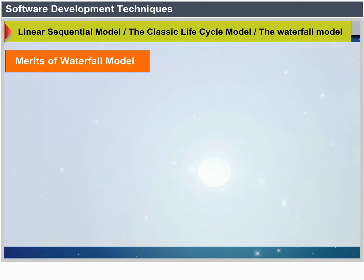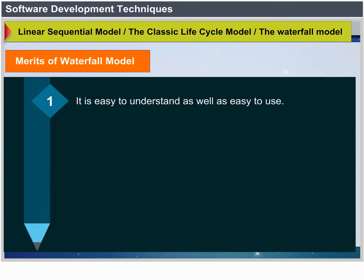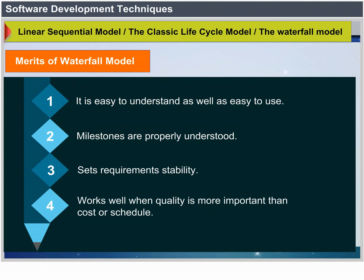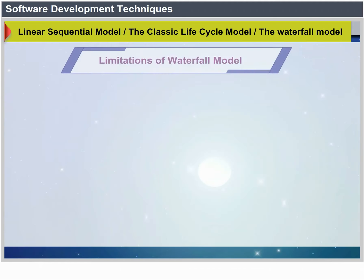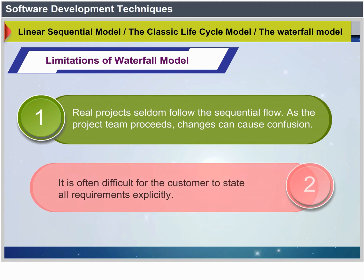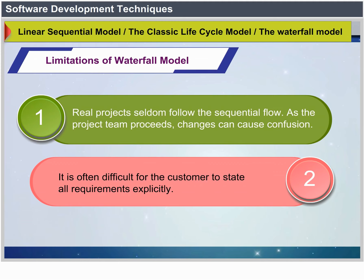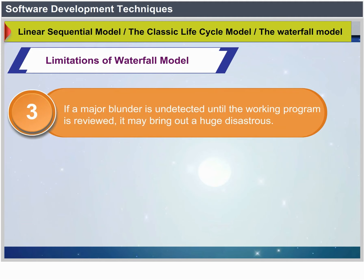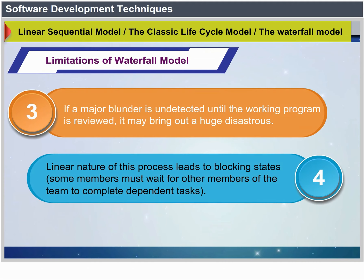Advantages of the Waterfall Model: easy to understand and use, milestones are well understood, sets requirement stability, and works well when quality is more important than cost or schedule. Drawbacks: real projects rarely follow the sequential flow, changes can cause confusion, it is often difficult for the customer to state all requirements explicitly, a major blunder if undetected can be disastrous, and the linear nature leads to blocking states where some members must wait for others to complete dependent tasks.